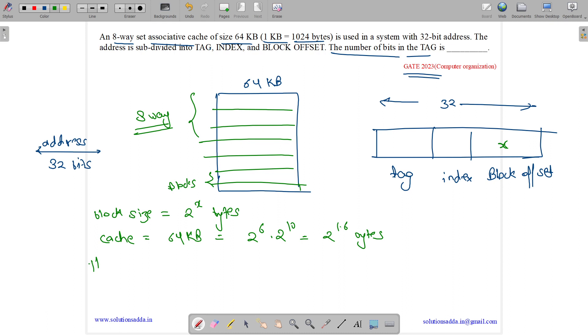So number of blocks per cache is equal to 2 to the power 16 divided by 2 to the power X, which is equal to 2 to the power 16 minus X.